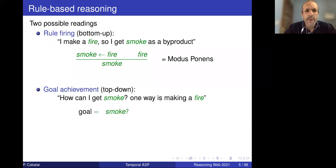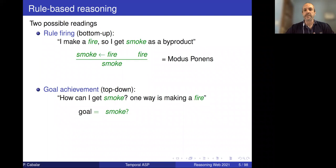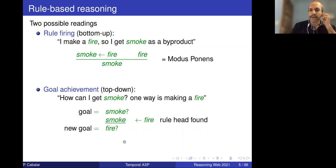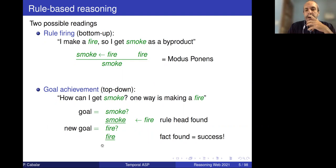The other way of reading the rule is as a way to achieve a goal. How can I get smoke? Think about the Native American sending messages — the goal was sending the message, so he had to cause smoke, and one way to get smoke is making a fire. If I think about the goal as smoke, I look at available rules, find this rule, and my new goal becomes making a fire. I go on looking for more rules — in this case, fire was a fact, so I got success.